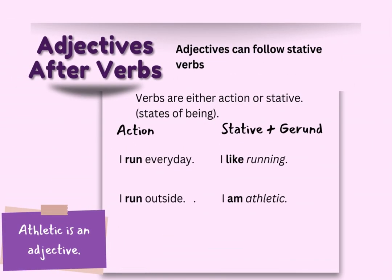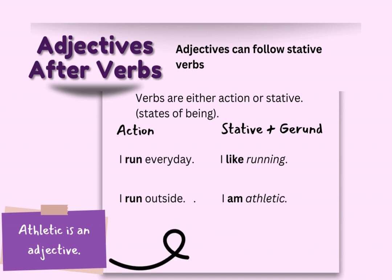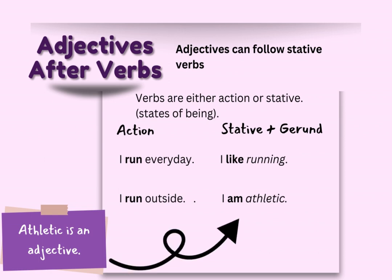We said in this lesson that adjectives come before nouns or pronouns, but adjectives can also follow verbs. However, the verb must be a stative or linking verb — a be verb. In the sentence 'I run every day,' 'run' is an action verb, and we do not use adjectives after action verbs. But in the sentence 'I like running,' 'like' is a stative verb with a gerund. I can change the stative verb to the be verb 'am' and create the sentence 'I am athletic.' 'Athletic' describes me, a pronoun — so here the adjective comes after the be verb 'am.'